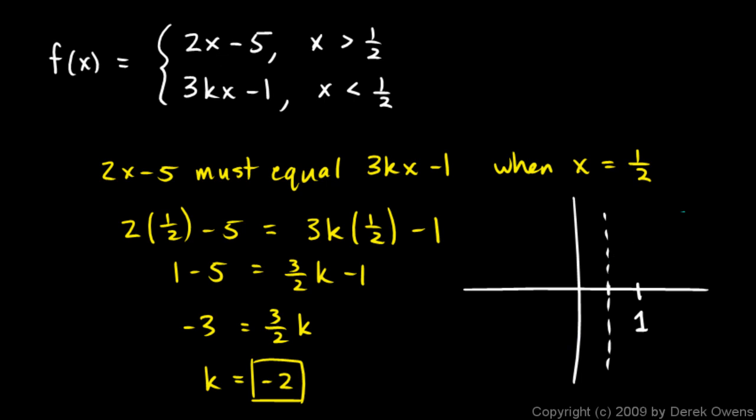This is 2x minus 5, looks something like this. It intercepts here at negative 5, and it's going to do something like this. So that's the function when x is greater than 1 half.